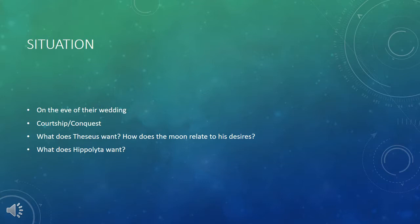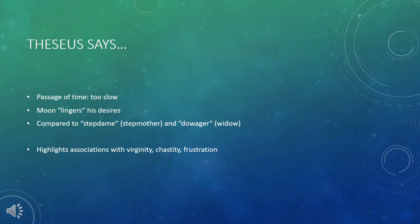We should pay attention to the strangeness of their relationship. How did Theseus and Hippolyta come to be married? Their courtship was actually a conquest — Theseus has defeated the Amazons and taken their queen as his bride. So we might ask what Theseus wants and how the moon relates to his desires. Looking closely at what he says, he's talking about the passage of time between now and their wedding night, and he says it's too slow. The old moon is keeping him from fulfilling his desires — to wed and bed his wife, Hippolyta.